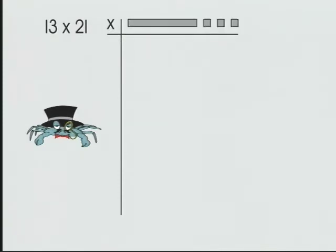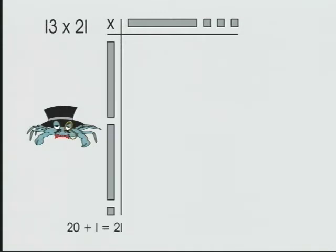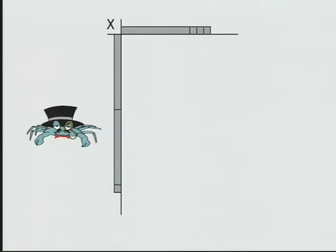One side, 13. One ten, three ones, 13. The other side, 21. Two tens, one one, 21. We form our grid and then fill it in to find our rectangle.